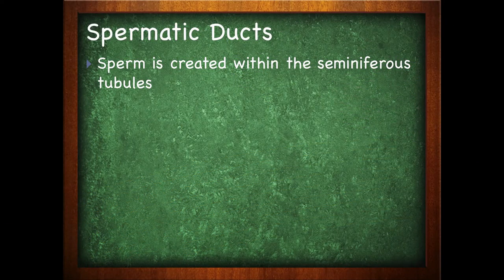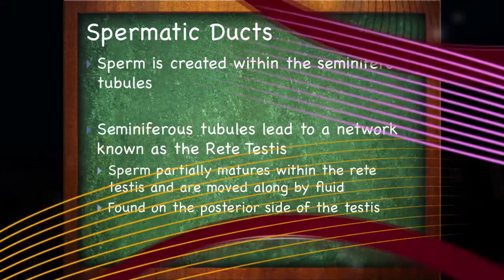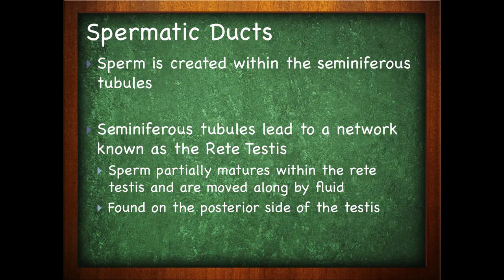Sperm is created within the seminiferous tubules. The seminiferous tubules are coiled and located within each of the lobules. Within the testes we have the segmented areas — the lobules — and sperm is developed for the very first time within the seminiferous tubules. The seminiferous tubules lead to a network known as the rete testes. The sperm partially matures within the rete testes and is moved along by fluids found on the posterior side of the testes.